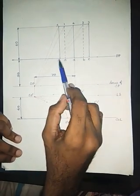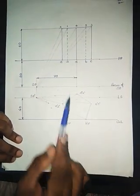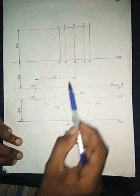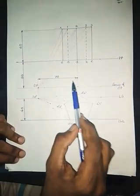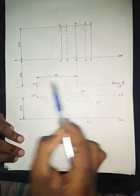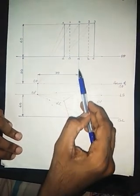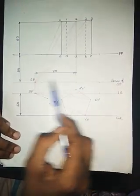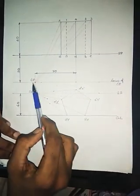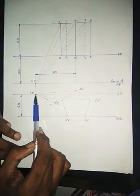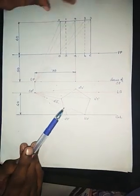When projecting to the top view, we get points A, B, C, D, E on one side and 1, 2, 3, 4, 5 on the other. The station point is 70 mm to the left of the center of the prism, so from the center I measure towards the left to locate SP.